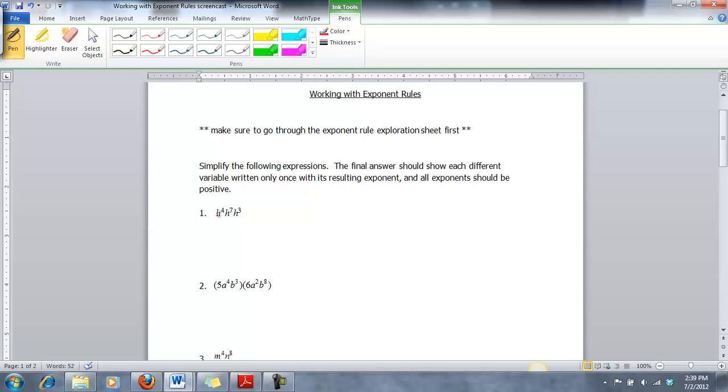So what that means is right now I see three h's. I have to write that so it's only one h. Because we're multiplying these h's, that means we're going to add those exponents. We're going to end up with h to the four plus seven plus three. When you add those three numbers together that gives us h to the fourteenth. I have my one variable written once with an exponent that is positive.